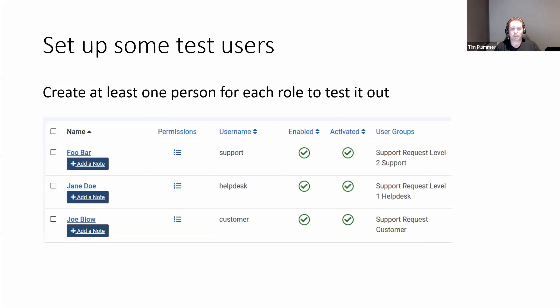To try out our app, I'm going to create three users — one for each of the roles: one customer, one help desk person, and one level two support person. I've just given them some random names.